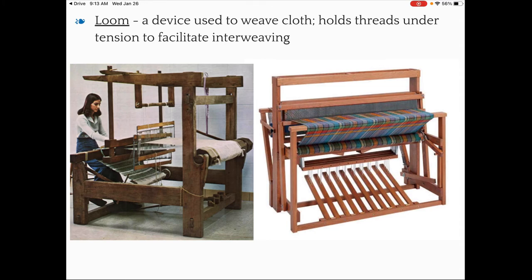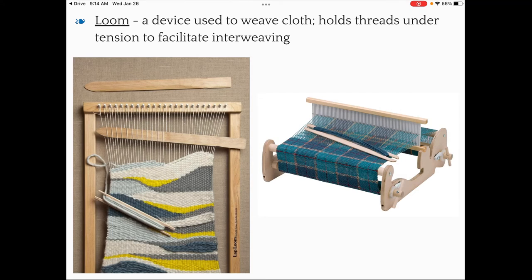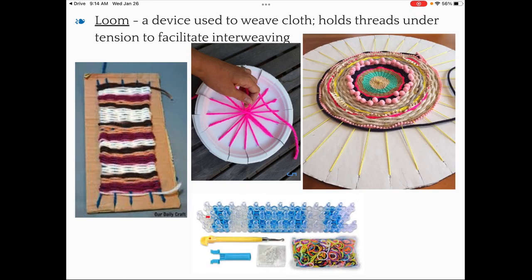Here are some different types of looms. Some are massive — you can see one where a girl is sitting in front of it and it would take up a big portion of the classroom. Some even have pedals at the bottom that you step on to move different parts of the loom. These are fancy and more expensive, designed to create a much larger piece of cloth or weaving. Then there's a wooden frame loom on the left where you can see the vertical warp strings and the colorful weft, and a tabletop loom on the right.